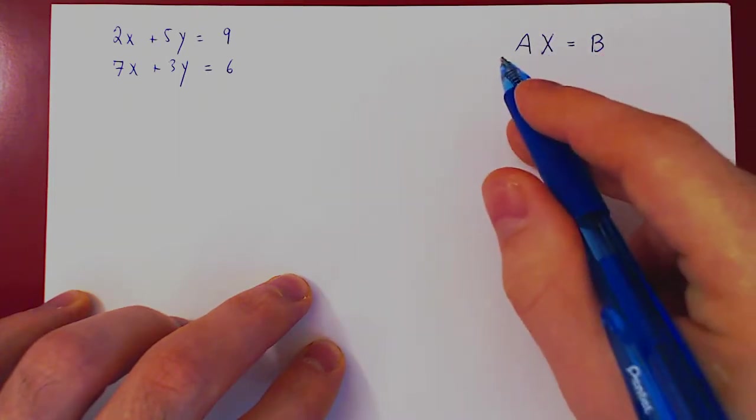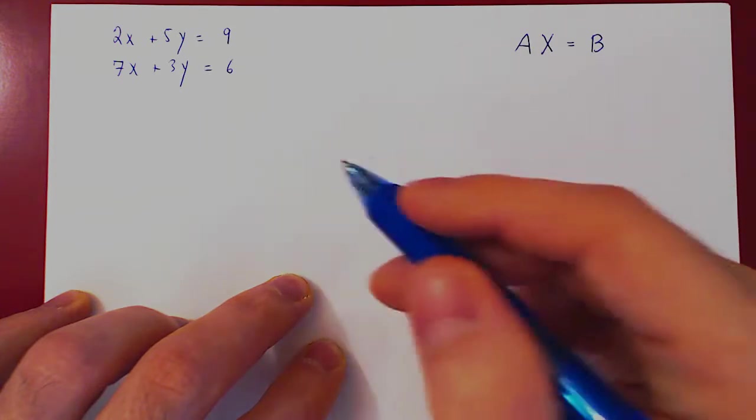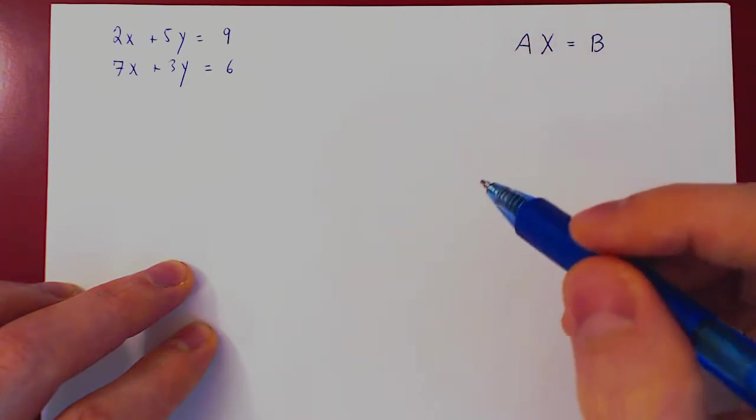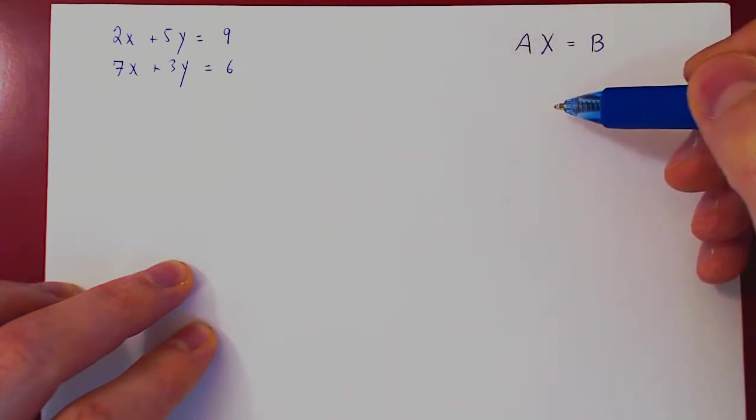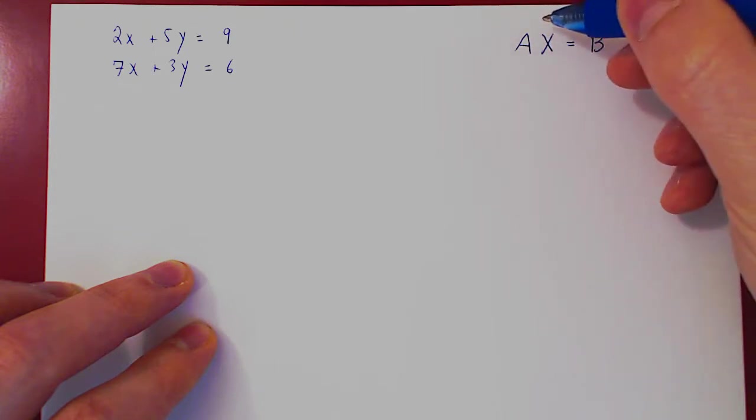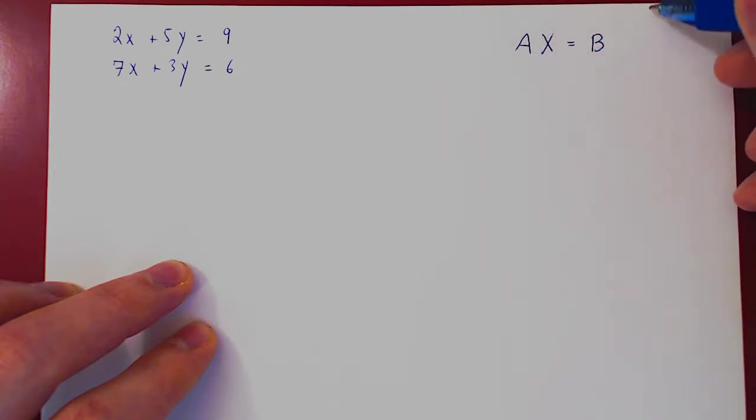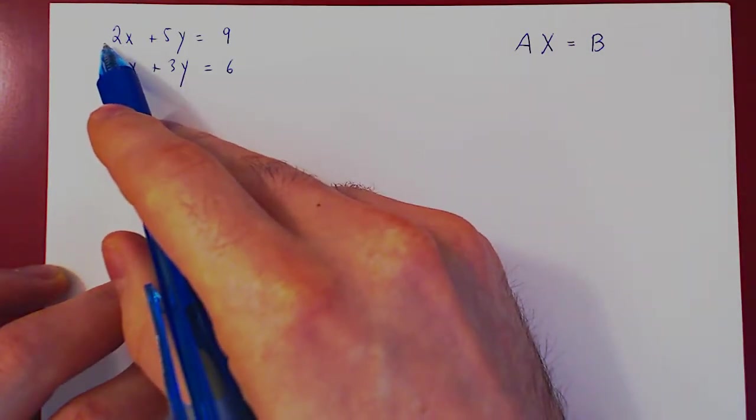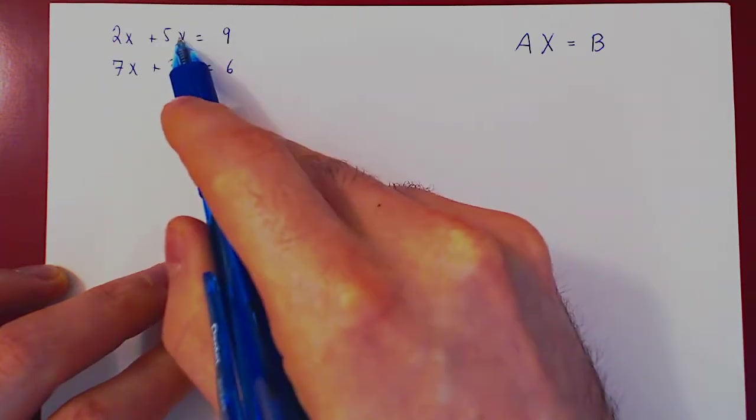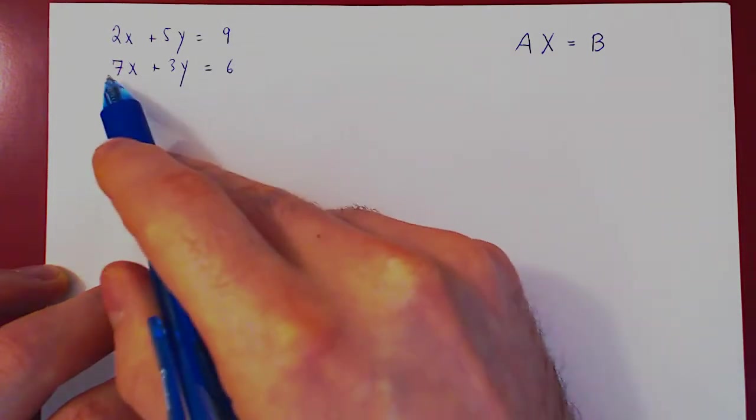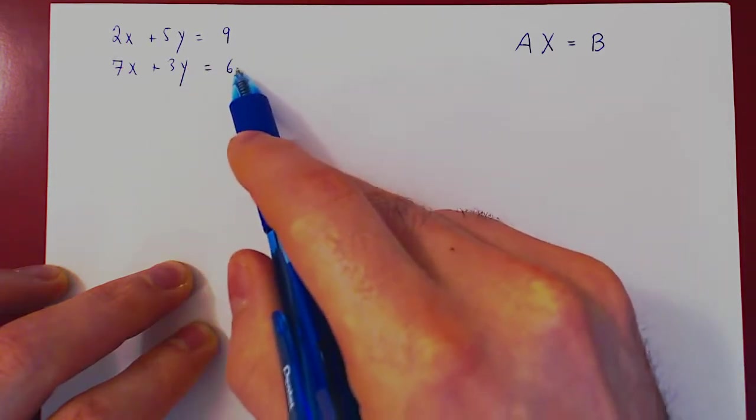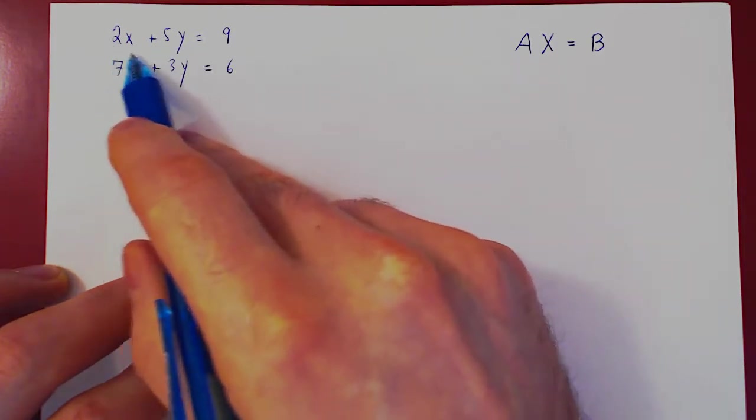And this would be what we consider matrix equality, A times X equals B. Well, remember that when you multiply two matrices, you do it one row times one column for each entry, and you multiply a row times a column by multiplying corresponding entries and then adding them up. And if you look here at the left hand side, it looks something like this. We have 2 times X plus 5 times Y equals the entry 9, and then 7 times X plus 3 times Y equals the entry 6. So this is the result of a row times a column.